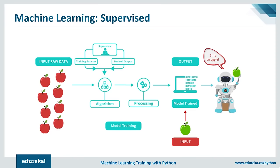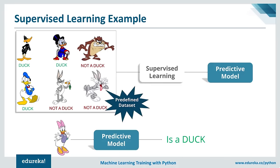Another example: a supervised learning process produces a model capable of recognizing ducks in images. The training dataset is composed of labeled pictures of ducks and non-ducks. The result is a predictive model that can associate a label — 'duck' or 'not duck' — to new images. Once trained, this model can be deployed to a production environment like a mobile app.